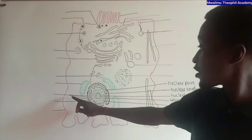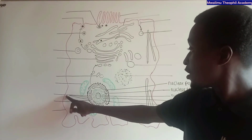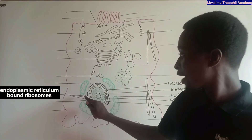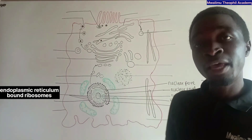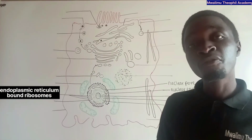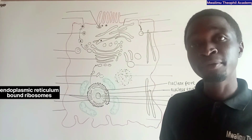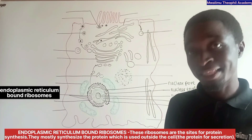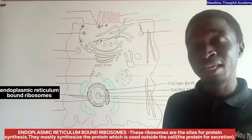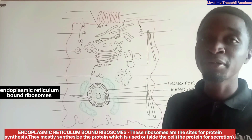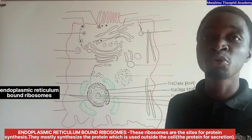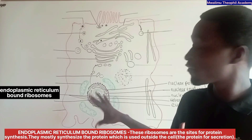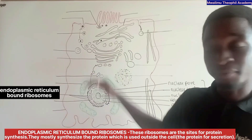These are endoplasmic reticulum-bound ribosomes. The role of endoplasmic reticulum-bound ribosomes is protein synthesis. They mostly synthesize proteins which are used outside the cell — that is, proteins for secretion.